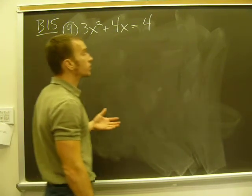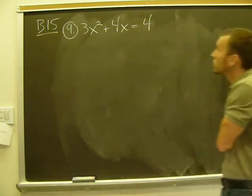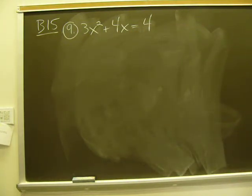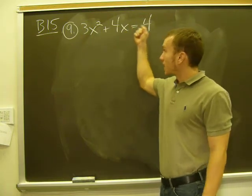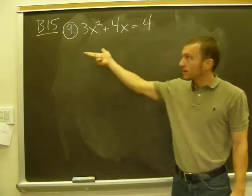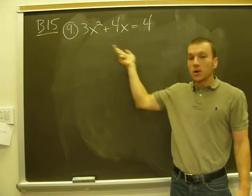Okay, B15 number 9, solved by factoring. 3x squared plus 4x equals 4. First thing I need to do is make sure that's equal to 0. In other words, I've got to subtract 4 from both sides in order to set my equation equal to 0.